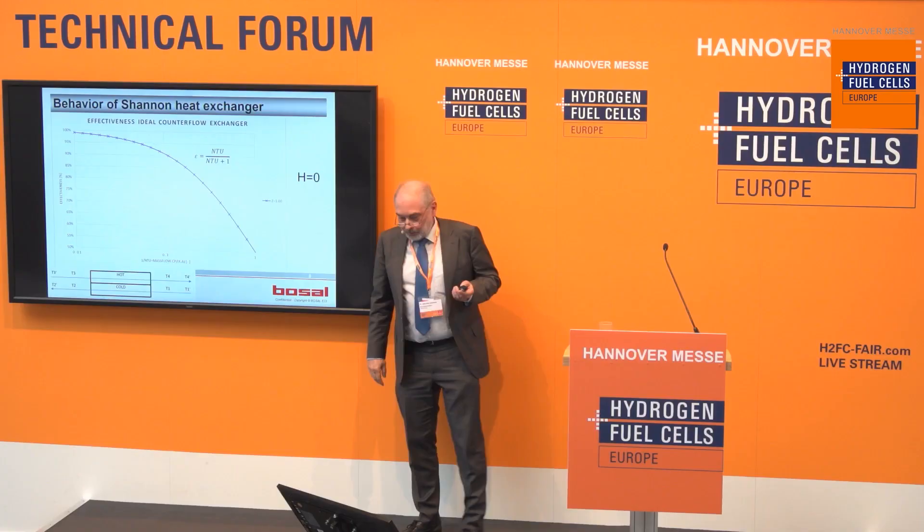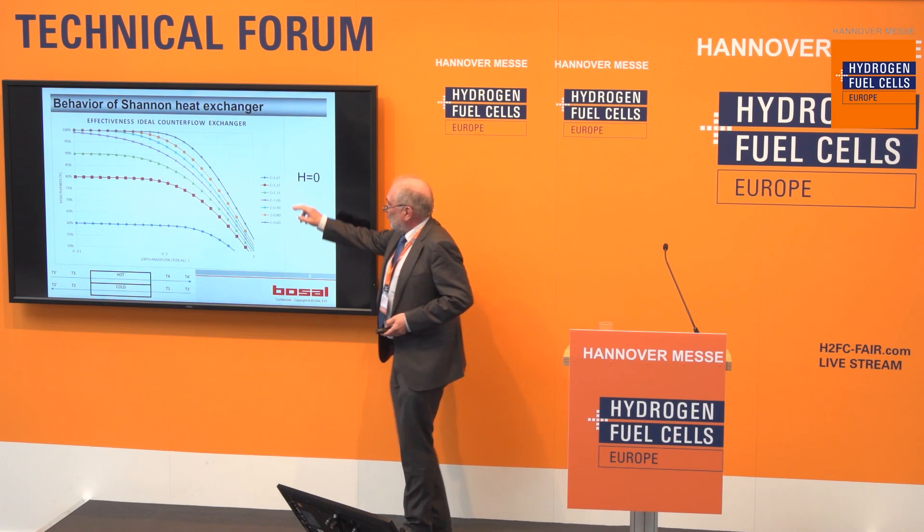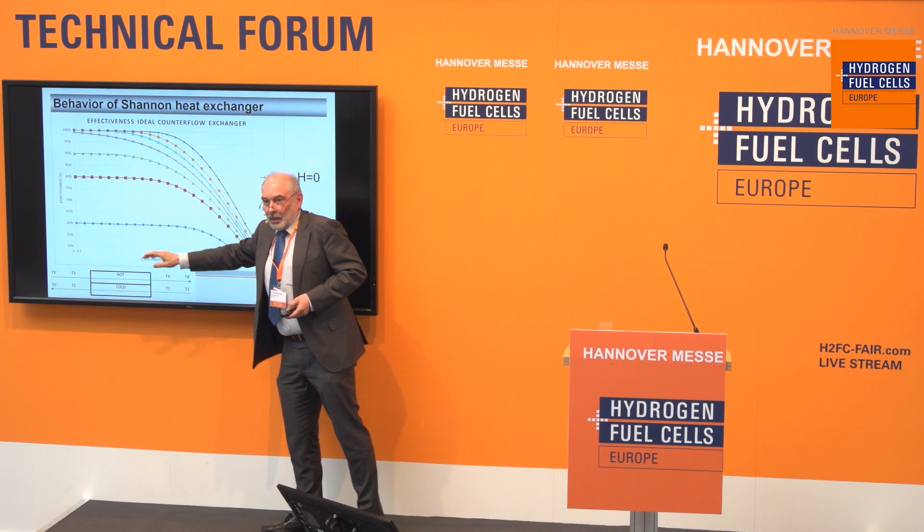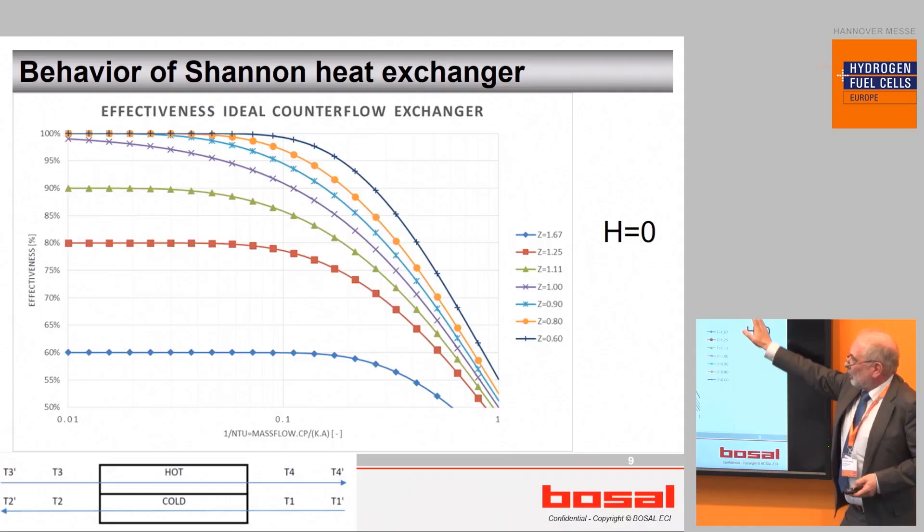If we use different Z values, you see that when you have more heat available effectiveness goes up, and when you have less heat available effectiveness goes down. But in any case, all these cases have an entropy of zero.